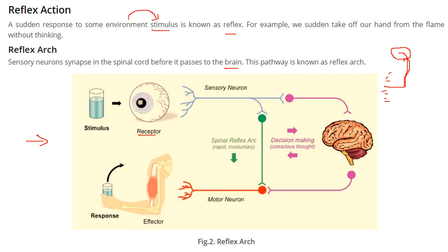The eye is one receptor. The skin is a sensory part of the body. When we have a sensory neuron, it goes to the brain where decision-making or conscious thought is done. The spinal reflex or reflex arc is quite rapid and involuntary. This is a motor neuron, and this is how the effector responds. This path is called the reflex arc.